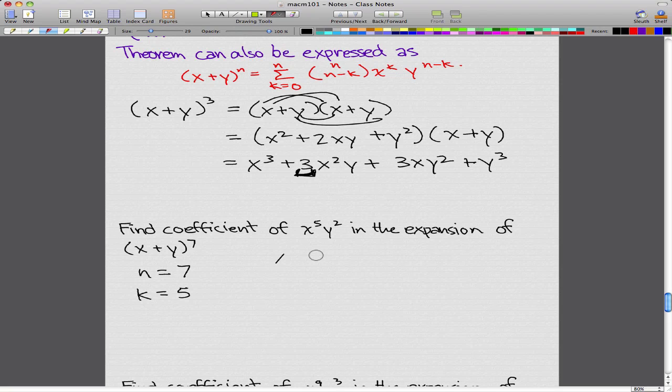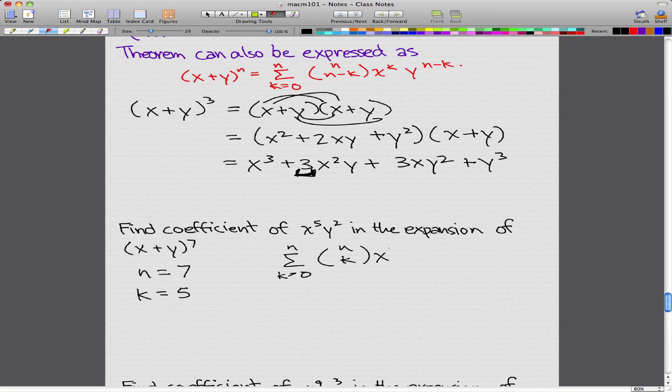So, the equation was sigma, and it's n choose k, x to the k, y to the n minus k. So, this is equal to that, and n is equal to 7.